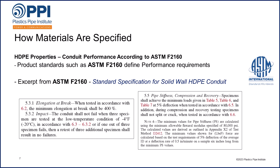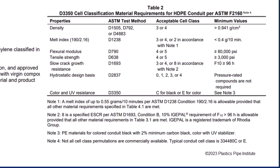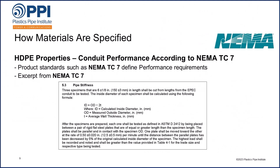Other product standards, published by other organizations, define similarly rigorous requirements. PPI and Conduit manufacturers work hard to make sure that all these industry standards have appropriate and similar requirements. However, they are not identical nor completely harmonized with each other. Another one of these standards is NEMA TC7, specification for solid wall coilable and straight electrical polyethylene conduit, which also defines material requirements in accordance with the ASTM D3350 cell class. Pipe stiffness is also defined within NEMA TC7, as you can see in section 5.3.